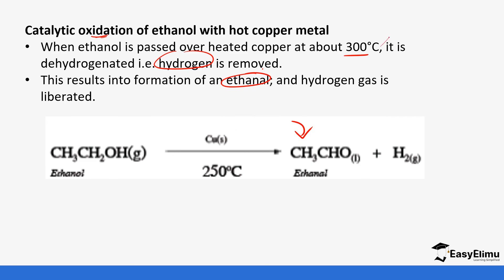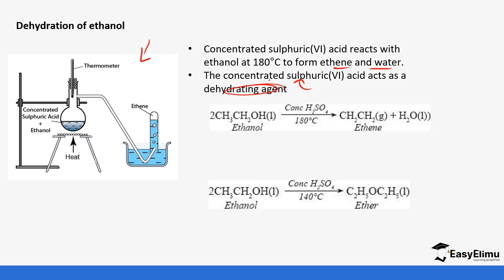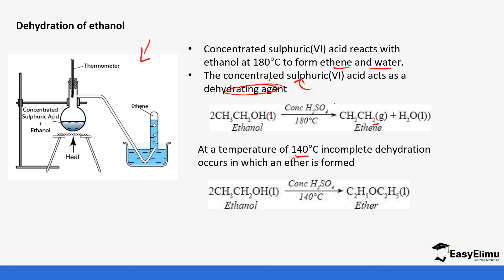Ethanol also undergoes dehydration in the presence of concentrated sulfuric acid to form alkenes — this is also the method of preparation of alkenes. The concentrated sulfuric acid acts as a dehydrating agent, removing the water element from ethanol. For example, ethanol can be dehydrated to form ethene, and at temperatures around 150°C there is incomplete dehydration, so ether is formed — ether is basically two ethyl groups with an oxygen bonded at the centre.